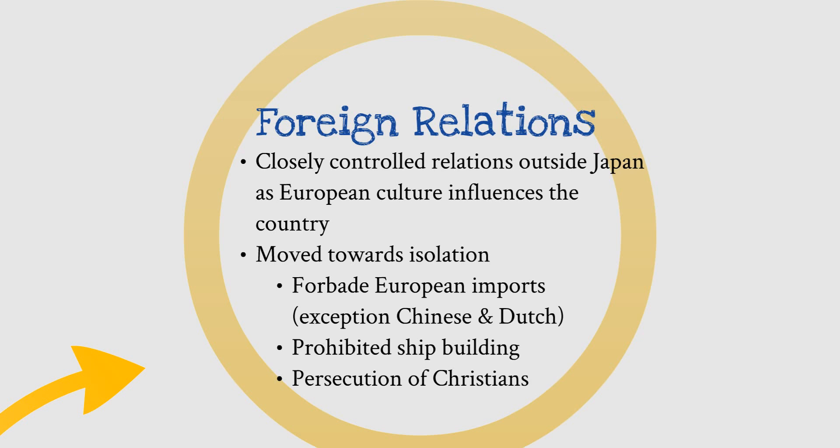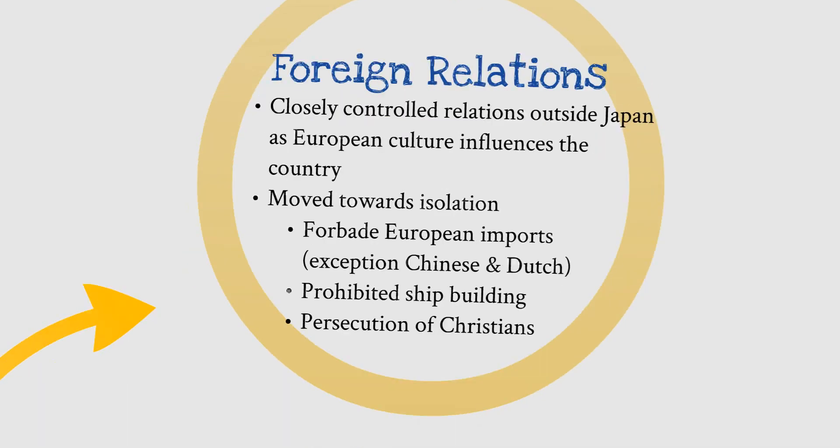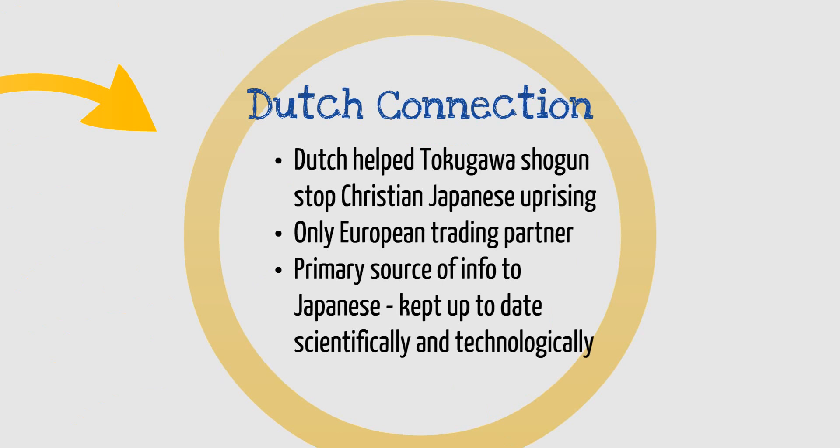Foreign relations were really different, with exceptions for the Chinese and Dutch. The Dutch connection is key: the Dutch actually helped the Tokugawa Shogunate stop a Christian-Japanese uprising. So the Dutch were kind of seen as allies — they kept Japan apprised of what was happening in Europe and were their one European connection. The Dutch and the Japanese is something key to remember. They were Japan's only trading partner and primary source of information about the outside world. So Japan didn't fall behind or go completely out of the loop, because of this Dutch connection.